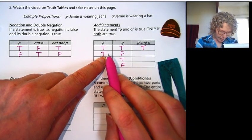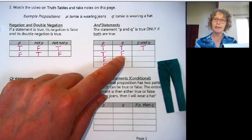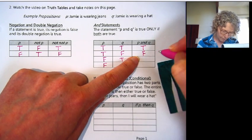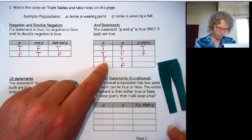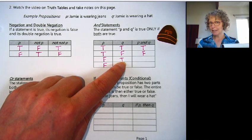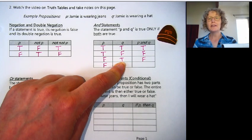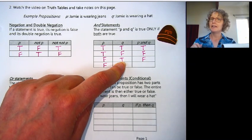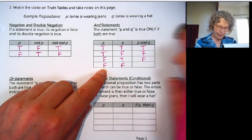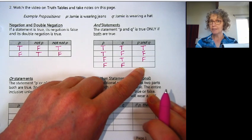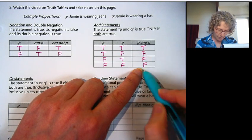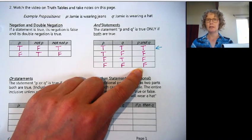In the second row, Jamie's wearing jeans is true, but Jamie's wearing a hat is false. So is Jamie wearing both jeans and a hat? No, that's false. In the third row, Jamie's wearing jeans is false, so get rid of the jeans, and Jamie's wearing a hat is true. Is Jamie wearing both jeans and a hat? No. In the last row we have false and false. So Jamie is not wearing jeans and not wearing a hat. Is Jamie wearing both jeans and a hat? No, that's false. So for our AND statement, notice one of them is different. The only way to get a TRUE statement is if both of them are true.